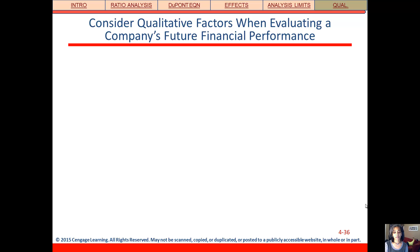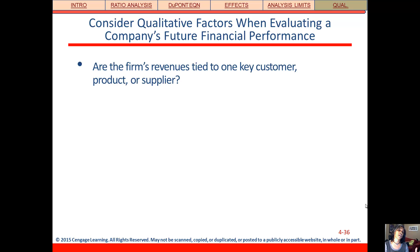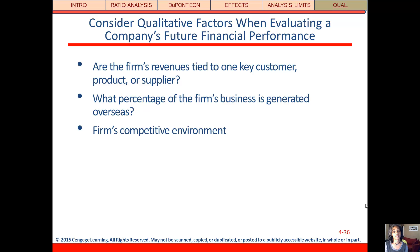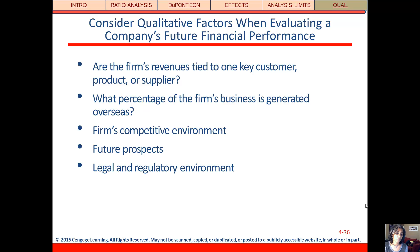We have to think about various qualitative factors that go beyond the ratios. Are all their revenues tied up in one key customer? What about their international business — what proportion comes from overseas, and are they operating in particularly volatile countries? What's the firm's competitive environment? Maybe we need to do a SWOT analysis — checking strengths, weaknesses, opportunities, and threats. What do they have on the horizon? How are they doing in research and development? What's going on legally or politically that could impact the firm?